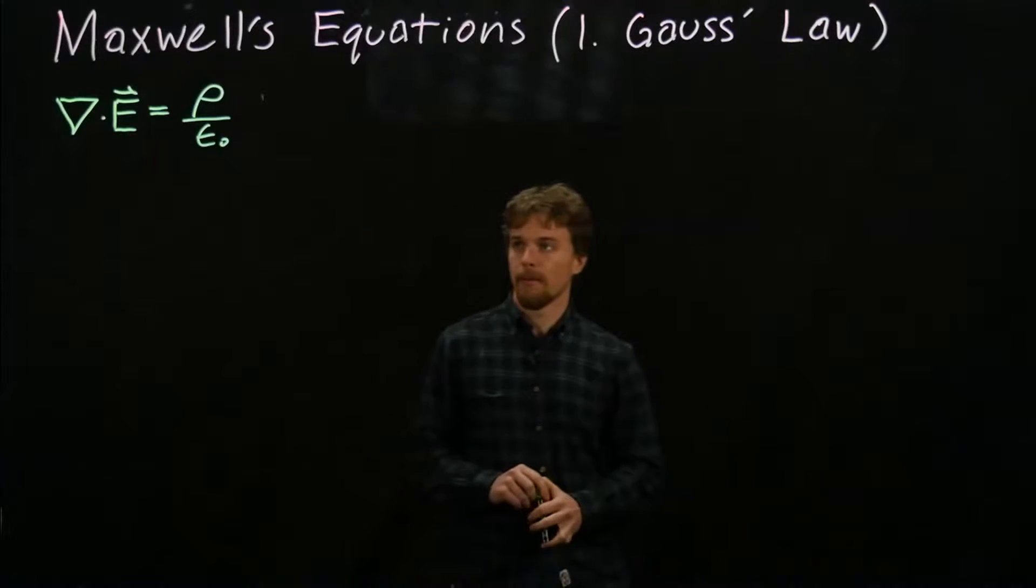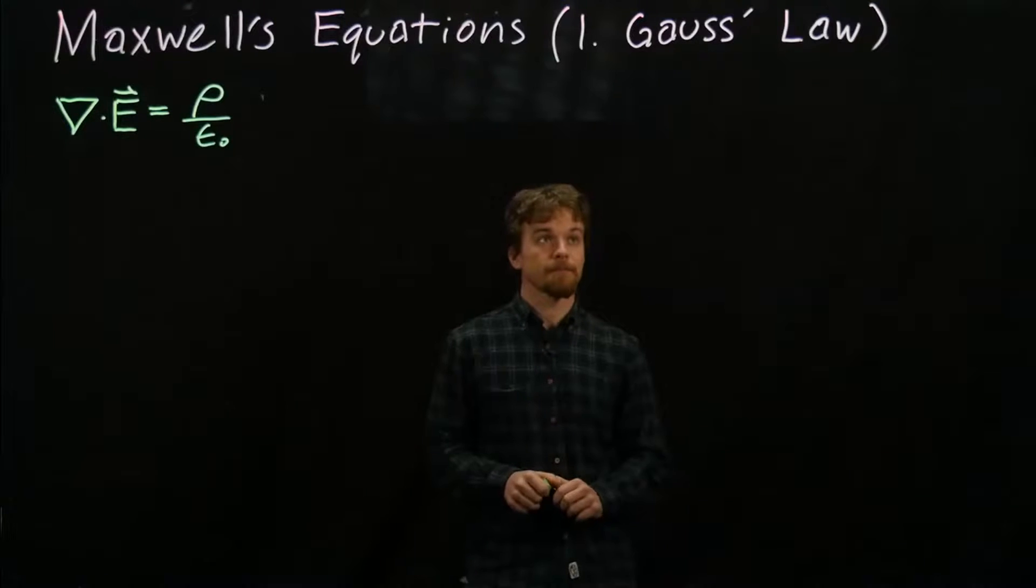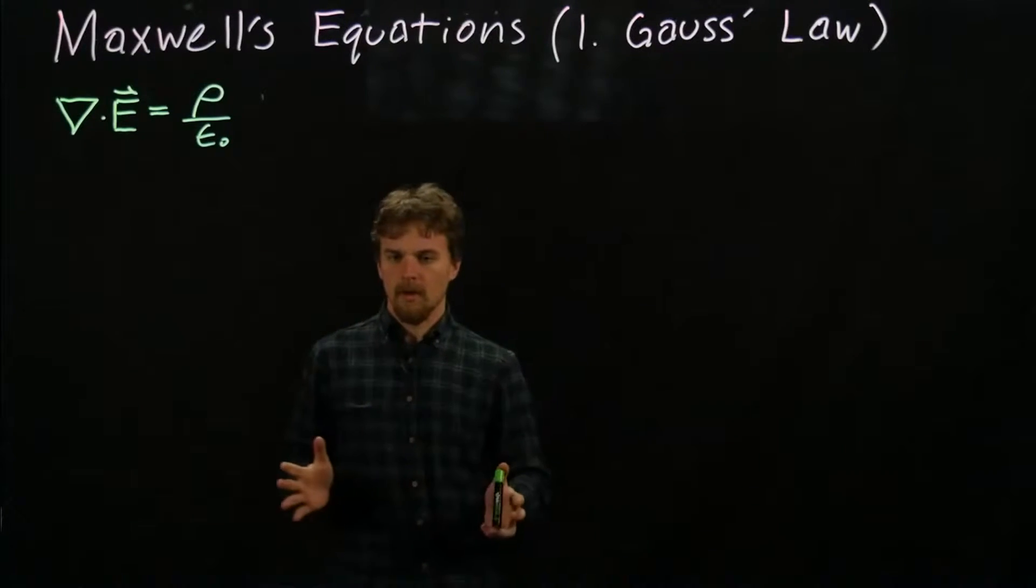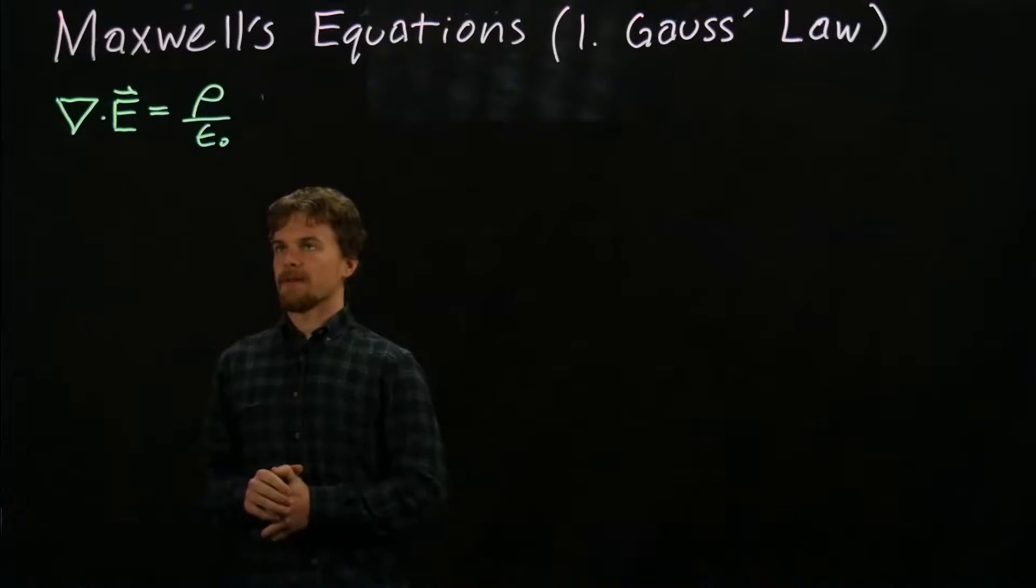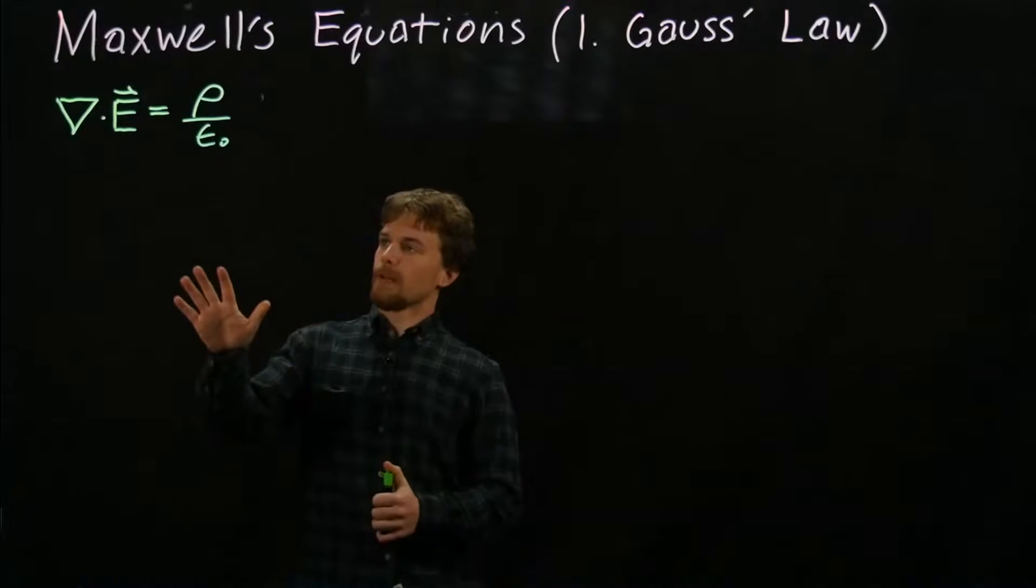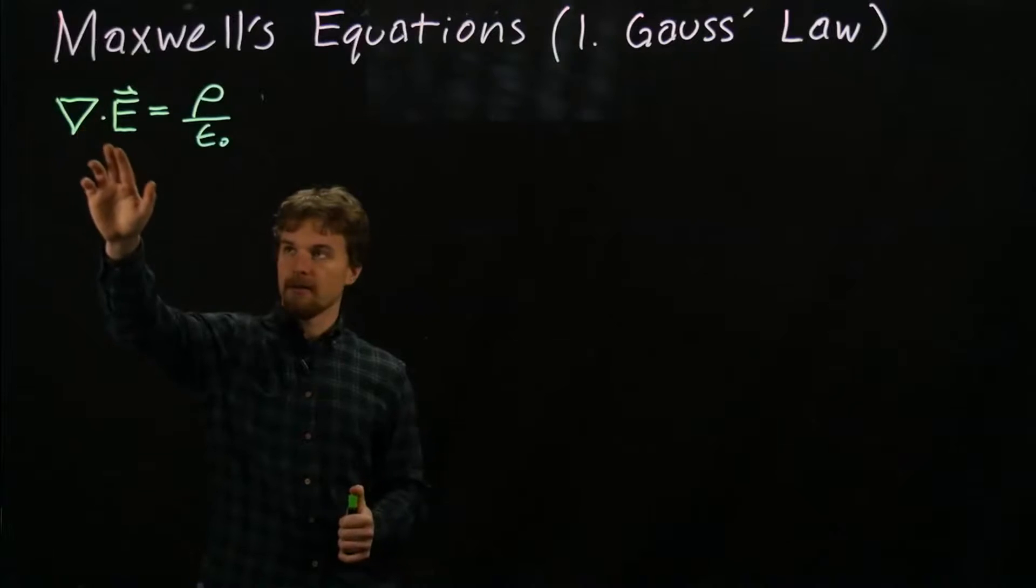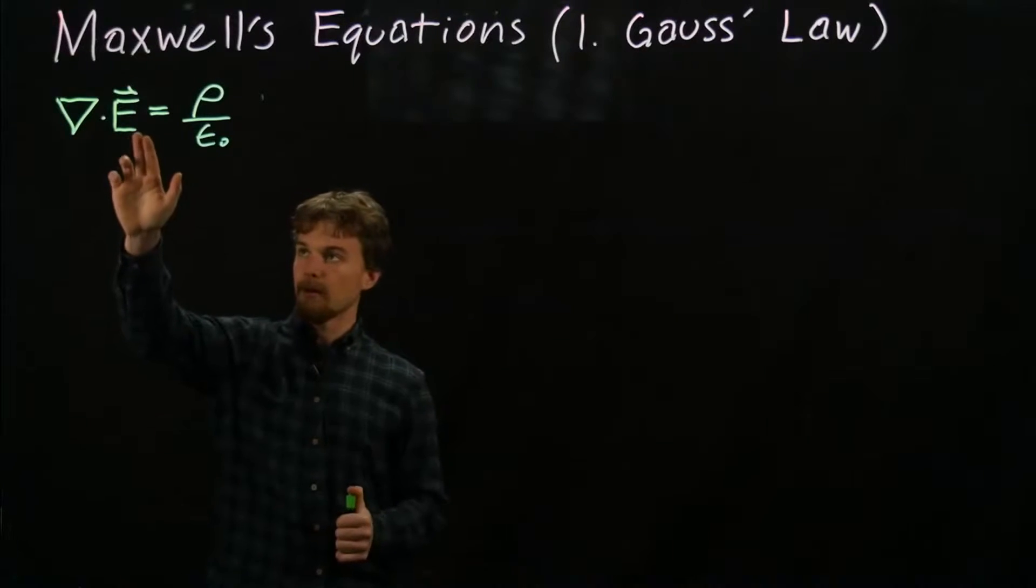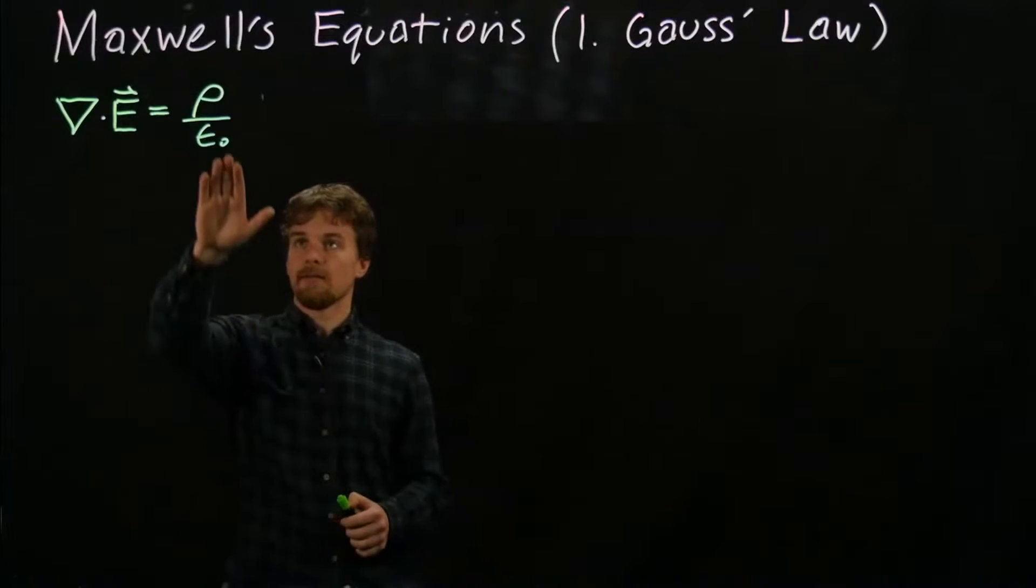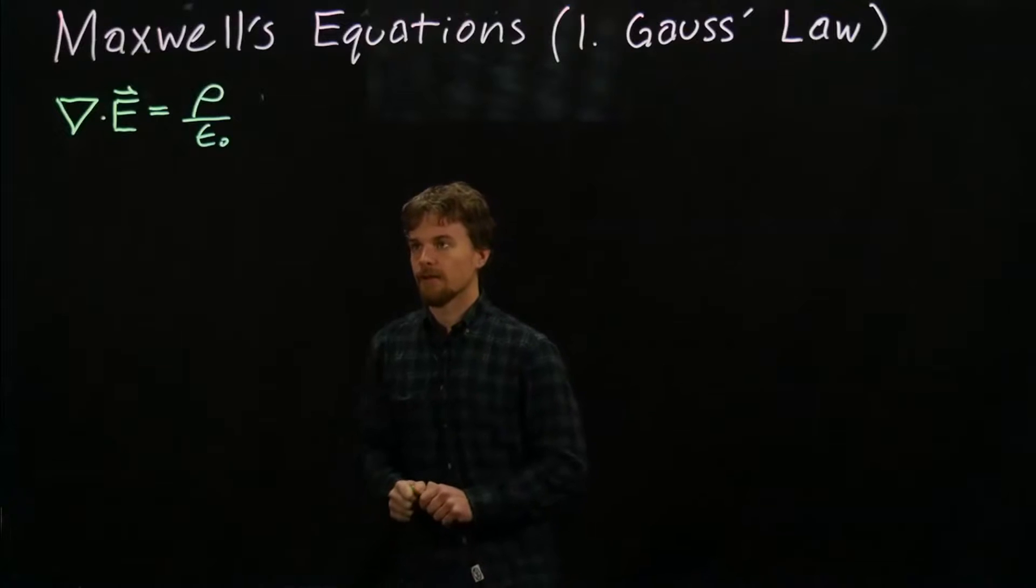Now there's four of them, so we're going to make four different videos. This is the first one, it's called Gauss's law. In its most simple form, it's the derivative form. This equation says that the divergence of a three-dimensional electric vector field is equal to the charge density ρ divided by this constant called the permittivity of free space ε₀.